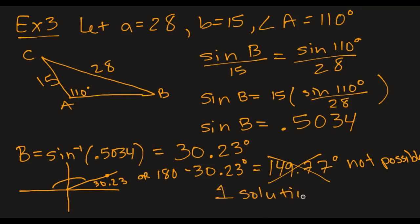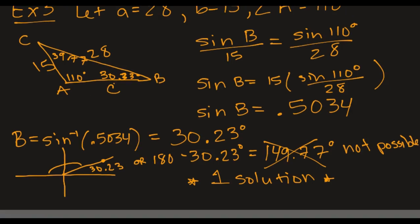So that means that we have exactly one solution. And when I say one solution, I mean one solution to the entire triangle, and we haven't completed that yet. We've only found one angle, 30.23 degrees. So we have some more work to do. First, I can take 180 minus 110 minus 30.23, and this angle is 39.77. Now I still need to find little c.